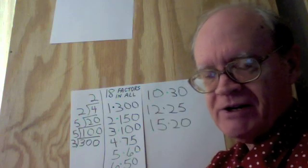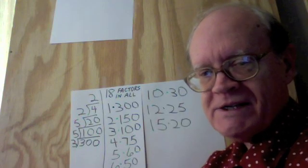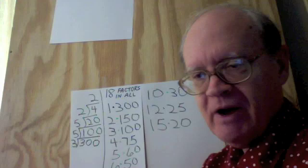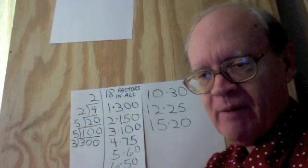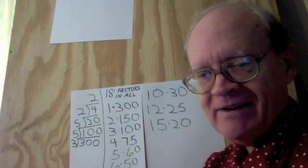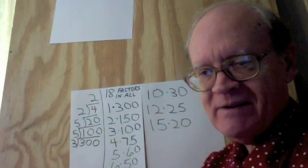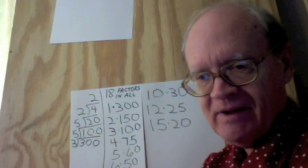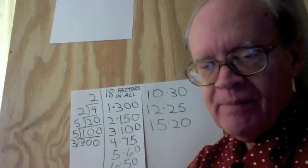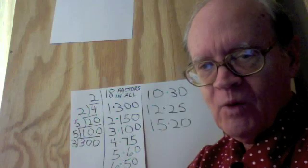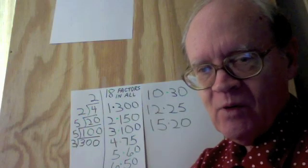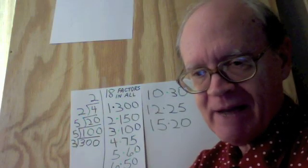So here's your challenge. What is the method for looking at the prime factors of a number and deducing correctly from that the number of factors in all? And why does that method work? And also work out two more examples, at least, showing all the details as I have done with these three examples.